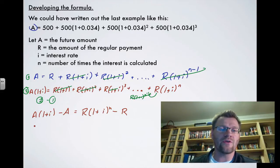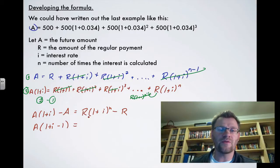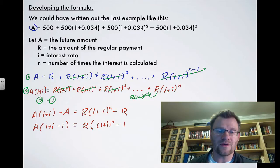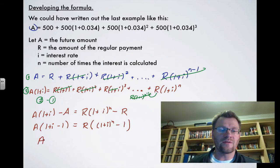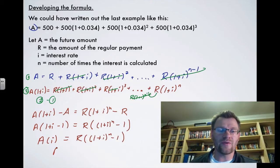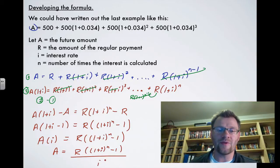Factoring the left side gives A·i, and factoring the right side gives R[(1+i)^n − 1]. Dividing both sides by i yields the final formula: A = R × [(1+i)^n − 1] / i. This is the formula that will help us a lot.